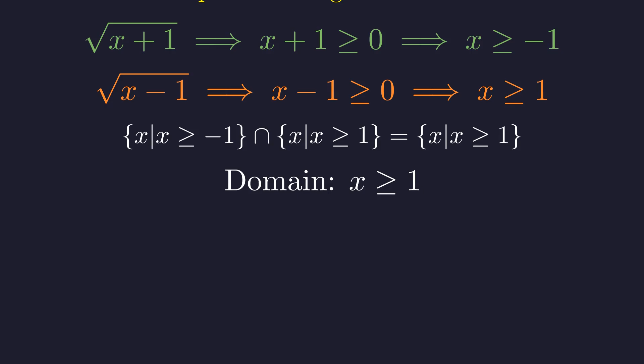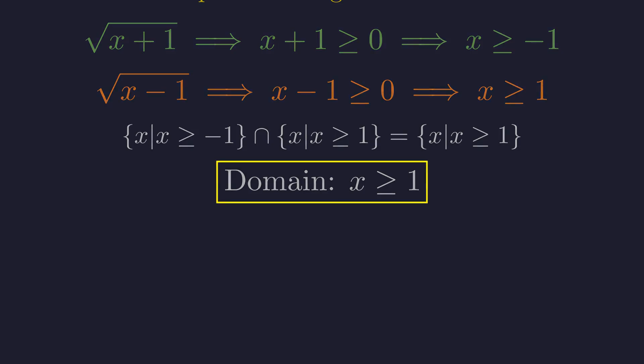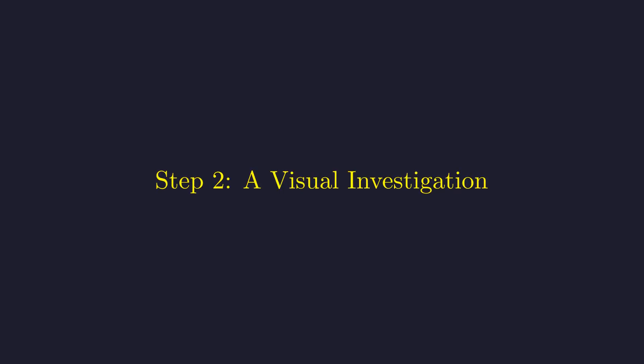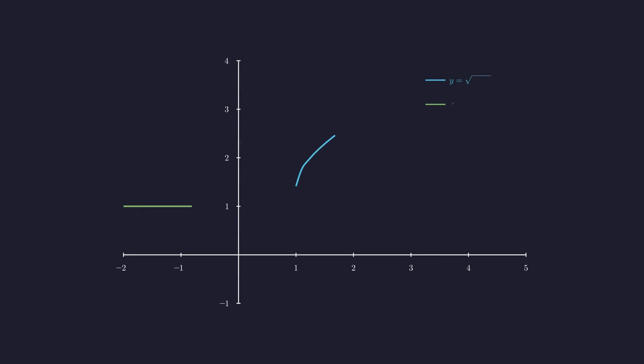So our domain is all real numbers x greater than or equal to 1 — this will be important to keep in mind. Sometimes a picture is worth a thousand algebraic manipulations, so let's plot both sides of our equation and see if they ever meet. I'll set up a coordinate plane here. The blue curve represents the left side of our equation: square root of x plus 1, plus square root of x minus 1.